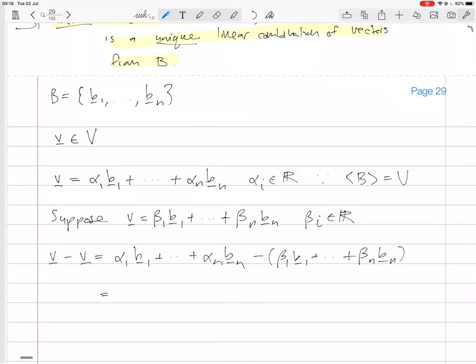This becomes α₁v₁ - β₁v₁ + α₂v₂ - β₂v₂ + ... + αₙvₙ - βₙvₙ.